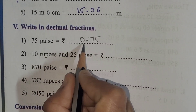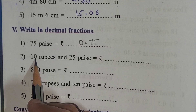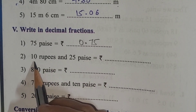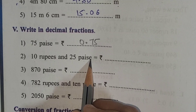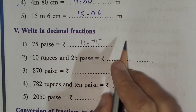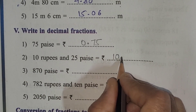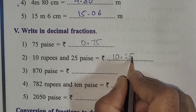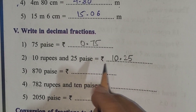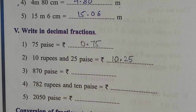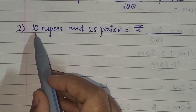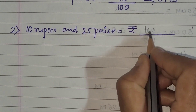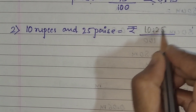Next: 10 rupees and 25 paisa. We can directly write this as 10.25 rupees. The rupees part is 10, and then we place the decimal point, followed by 25 for the paisa, giving rupees 10.25. There is also another method for this which I will show you.